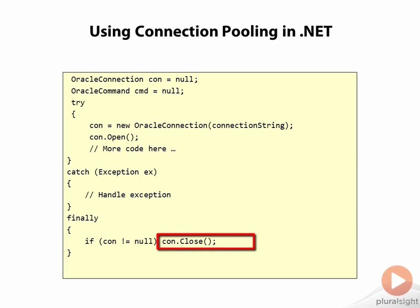Then, when you call close on your connection, you're not actually closing the physical connection to the database. What you are doing is returning this connection to the pool, so it can be checked out by another thread in your application. If we were using using statements rather than a try/catch/finally block, then when .NET executed the using statement, this is when the connection will be returned to the pool.